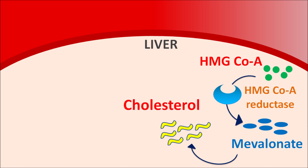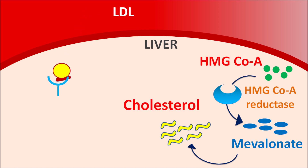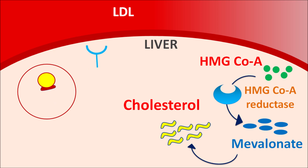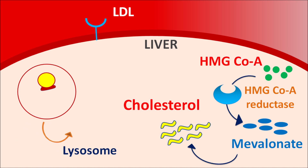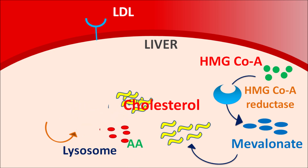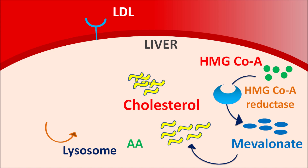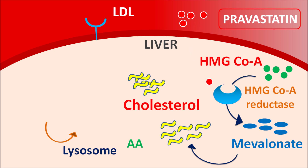Once mevalonate is formed, it is converted into cholesterol by several steps. This is one source of cholesterol for the liver. The liver can also obtain cholesterol from other sources, particularly from circulating LDL cholesterol. LDL cholesterol present in the blood can be taken into the liver through specialized LDL receptors. After internalization, LDL receptors are transported back to the membrane. Lysosomes then digest this LDL cholesterol, releasing free cholesterol. Thus, biosynthesis and LDL uptake are the two important cholesterol sources for the liver.